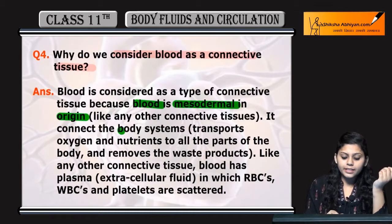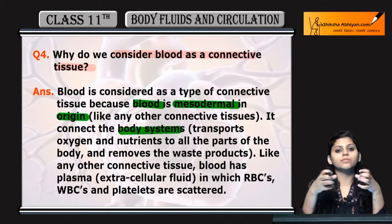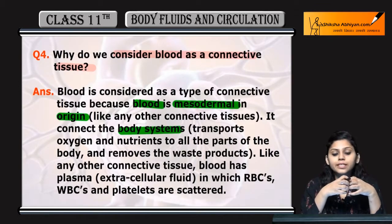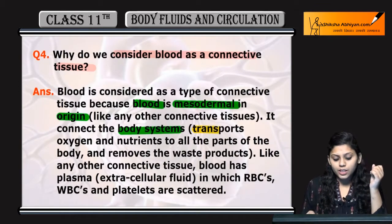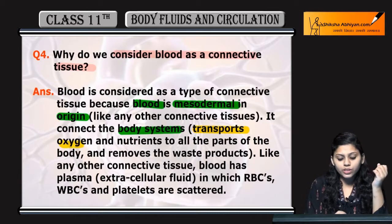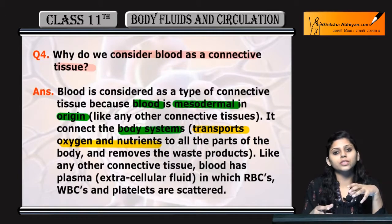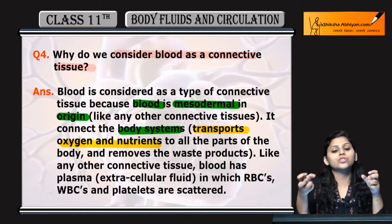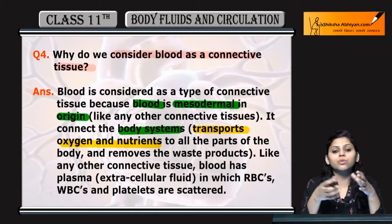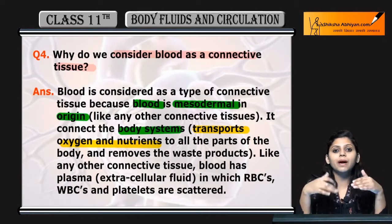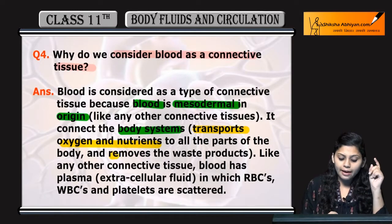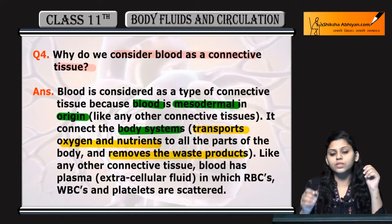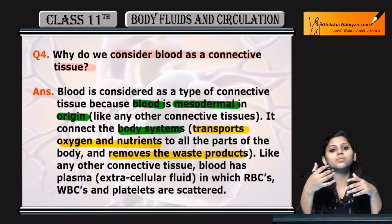Blood connects the body systems. It transports oxygen and nutrients to all parts of the body and removes the waste products of the body.